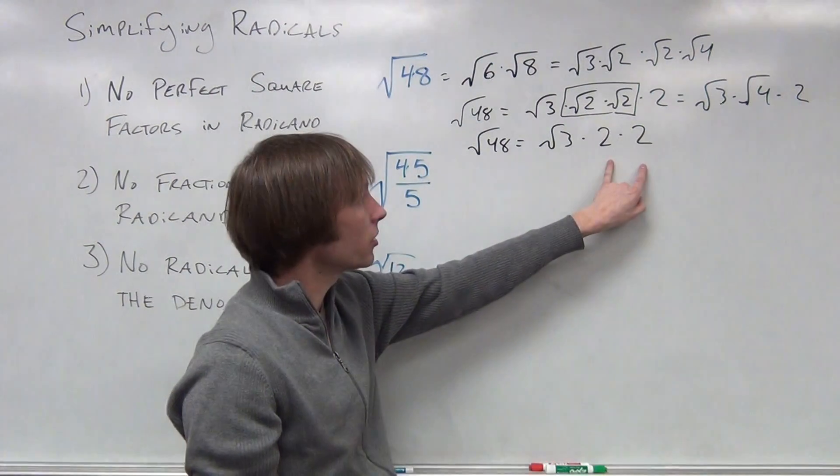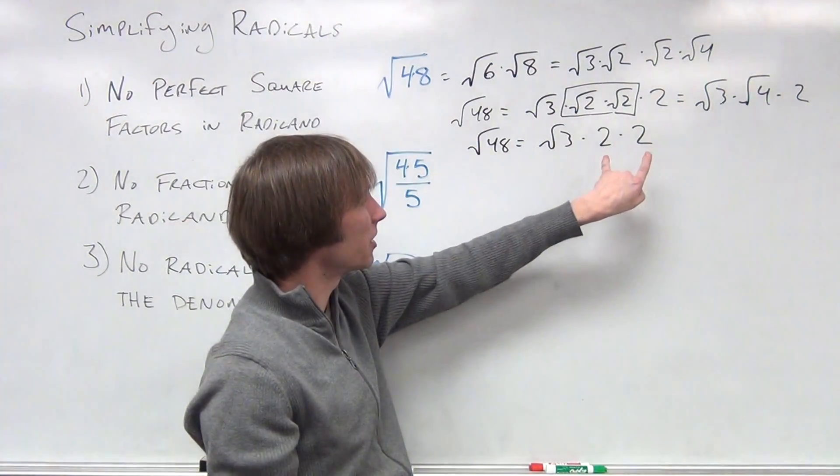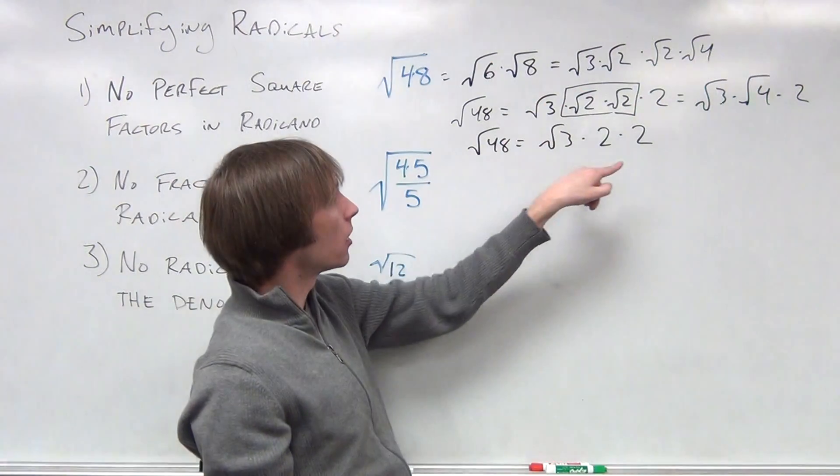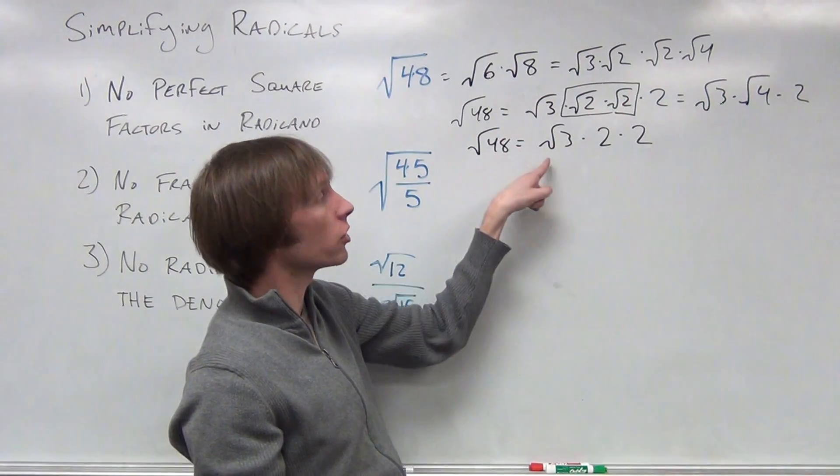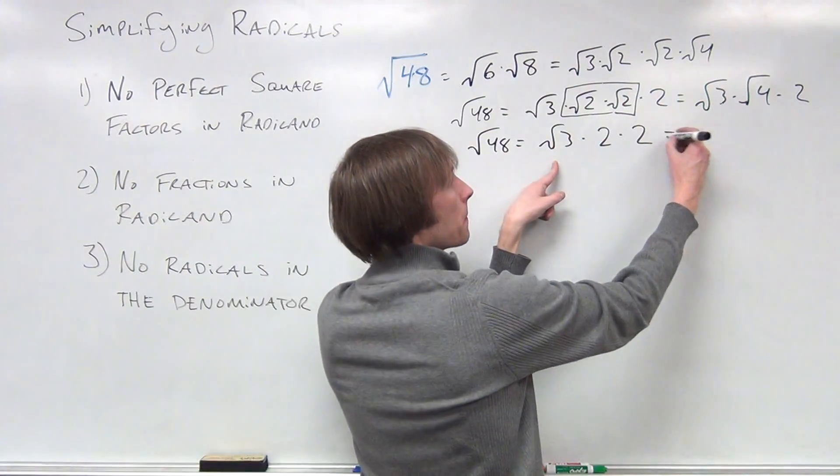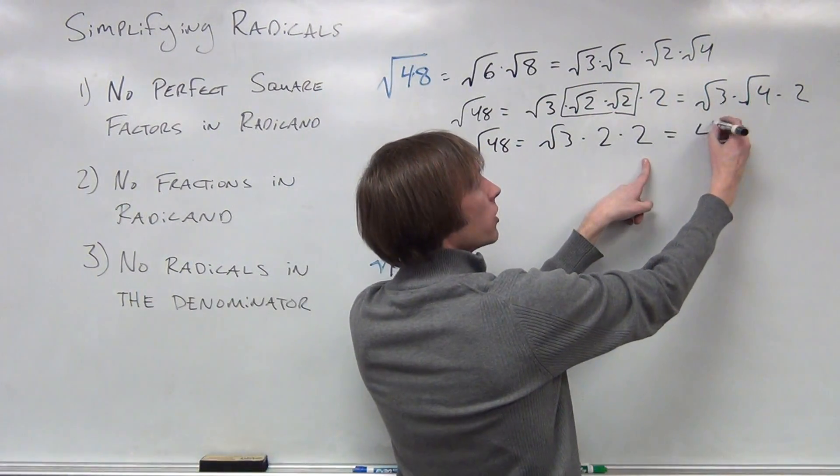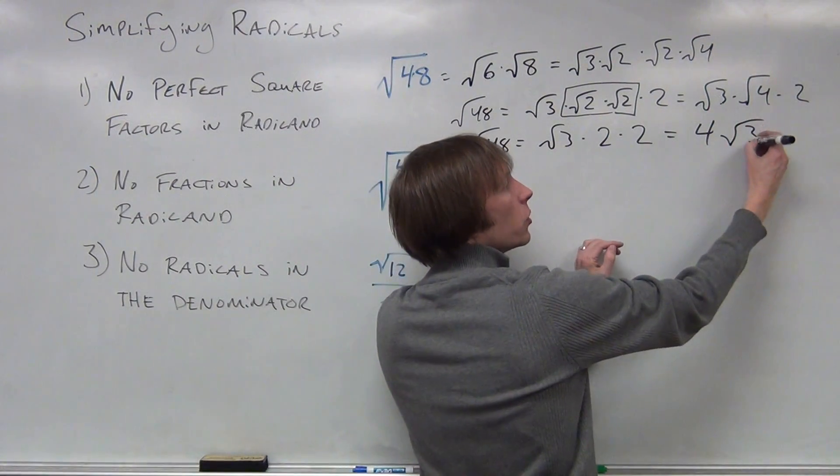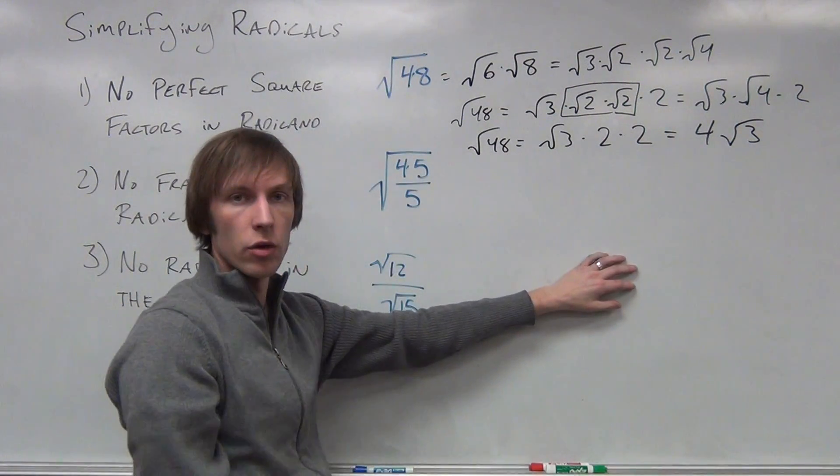That means that my radical 48 here is equal to the square root of 3 times 2 times 2. The way that we write this is we put the rational factors in front of the irrational factors. So we will do 2 times 2 gives me 4. The square root of 3 doesn't have another radical, so we will write that as the square root of 3.